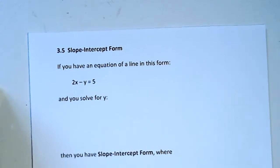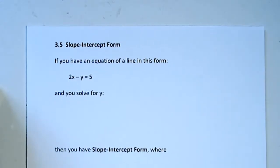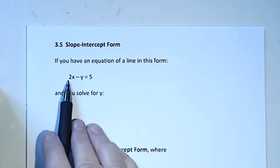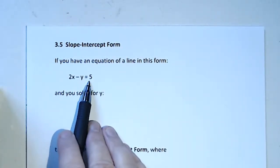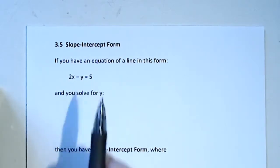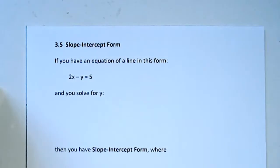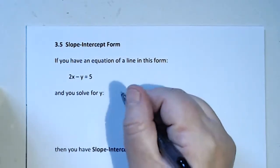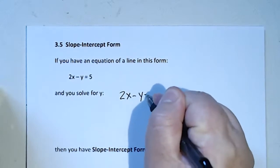If you have an equation of a line in this form, 2x - y = 5, with x and y on the left-hand side and a number on the right-hand side, I'm going to solve for y.